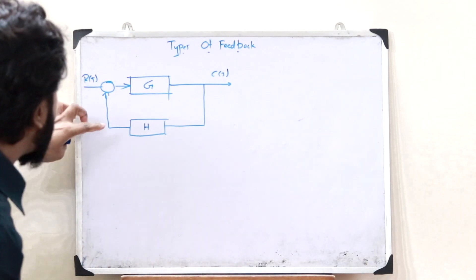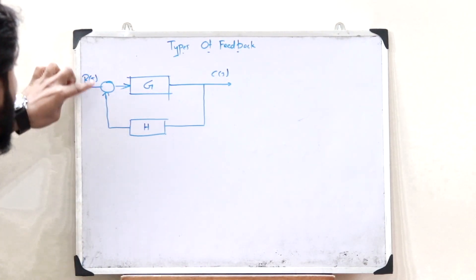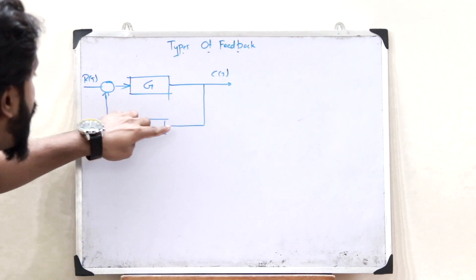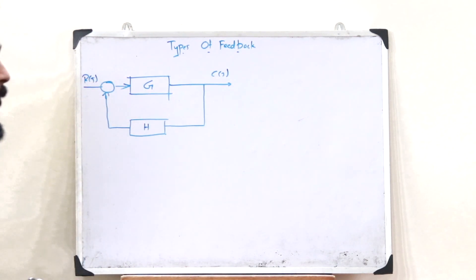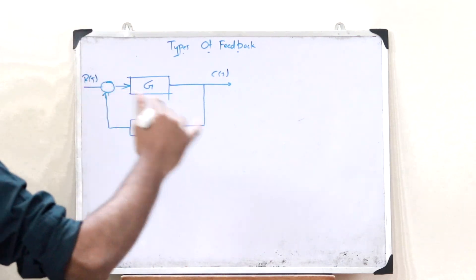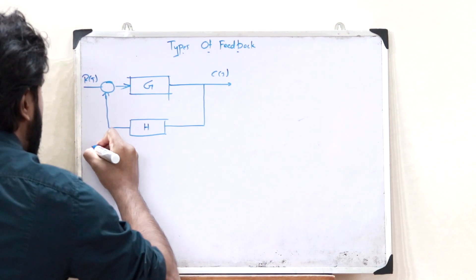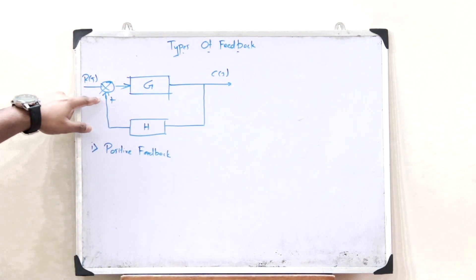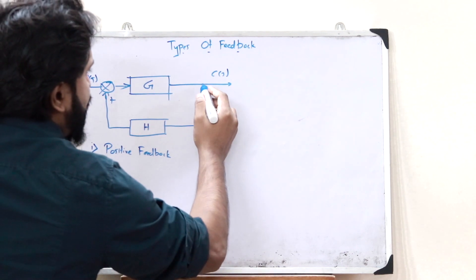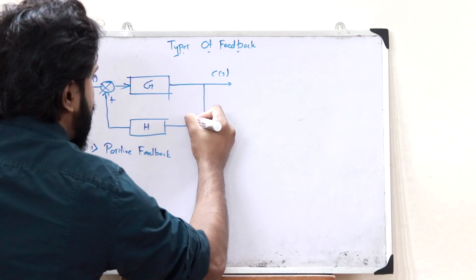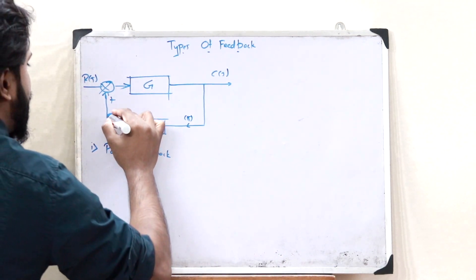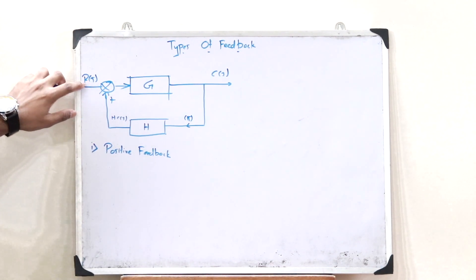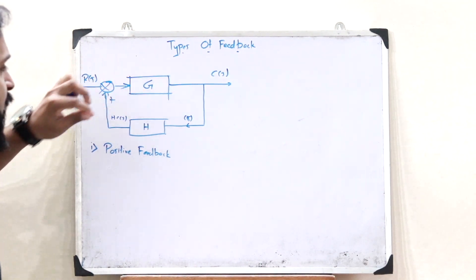In the case of positive feedback, we are adding the feedback signal along with whatever signal we are giving here. In the case of negative feedback, we are subtracting the feedback element. Let us first see the case of positive feedback. In the case of positive feedback, we are adding this particular signal — whatever we are getting is being added. So the output signal C of S passes through H, and we get H into C of S. This H into C of S is added with the input signal R of S and is passed through the gain G.